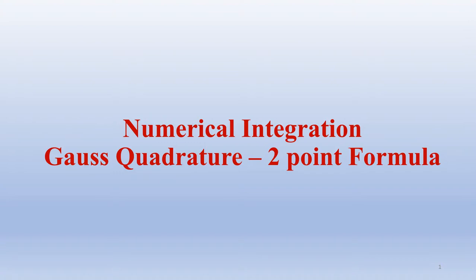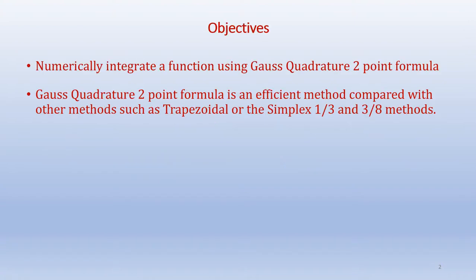Our objectives are to numerically integrate a function using Gauss Quadrature two-point formula. Gauss Quadrature two-point formula is an efficient method compared with other methods such as trapezoidal or the Simpson's one-third and three-eighths methods in general, based on the number of points chosen.